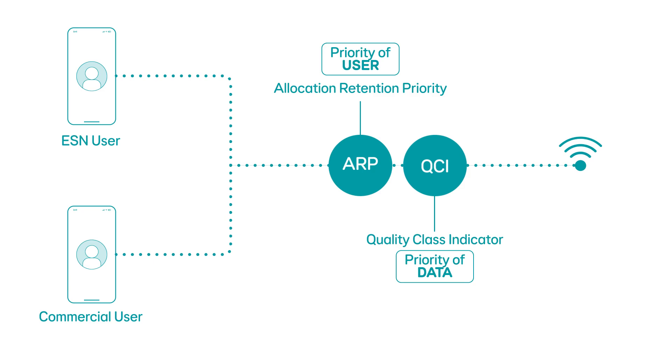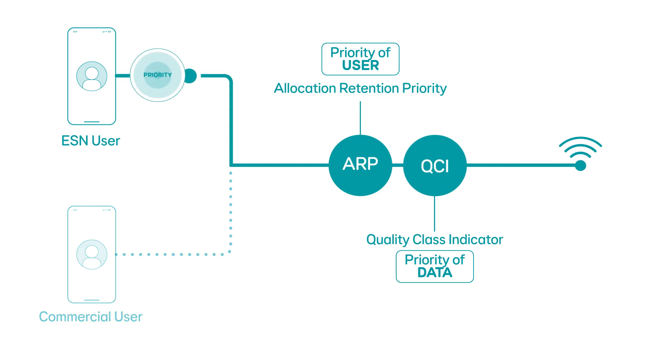This means that an ESN user using a push-to-talk call will be prioritised over a commercial customer using the internet on their smartphone.